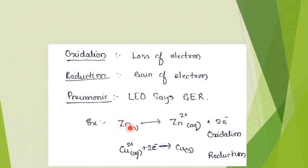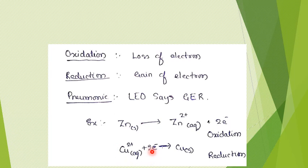It is the species zinc solid that is getting oxidized to zinc 2+. Zinc 2+ cannot undergo further oxidation because it cannot lose more electrons. Similarly, what is reduction in terms of electrons? Very simply, gain of electron is called reduction. For example, copper 2+ aqueous can accept two electrons — if some other species donates electrons to it, then by accepting electrons it gets converted to copper solid. This process is called reduction.